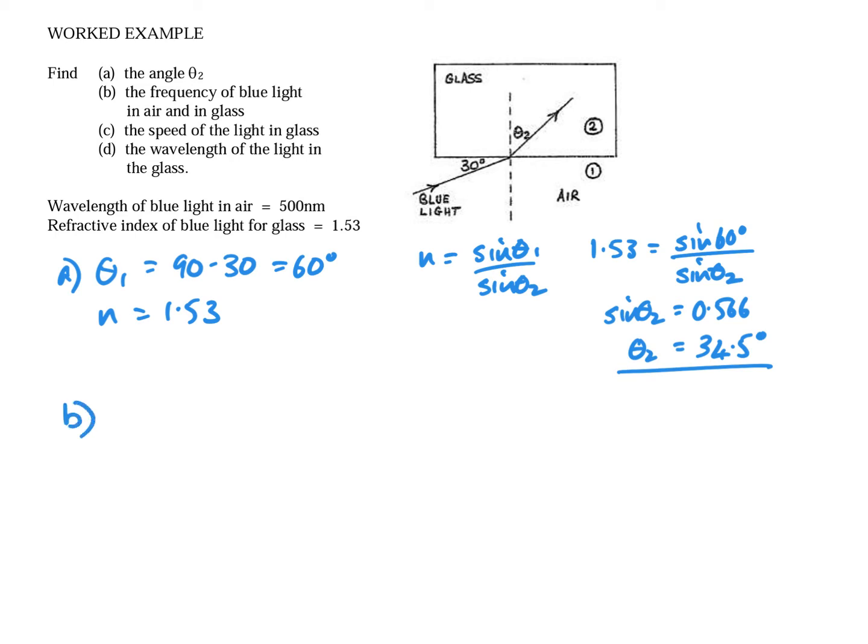Part b, the frequency of blue light in air and in glass. First of all we start with air. We're told that wavelength in the air, so I'm going to label that lambda 1, and we know that the speed of light is 3 times 10 to the power 8 meters per second. So now we can use v equals f lambda to link these together. 3 times 10 to the 8 equals f times 500 nanometers, which is 500 times 10 to the minus 9. Rearranging that, 3 times 10 to the 8 divided by 500 times 10 to the minus 9 is 6 times 10 to the 14 hertz. All visible frequencies are in the kind of 10 to the 14 hertz range.